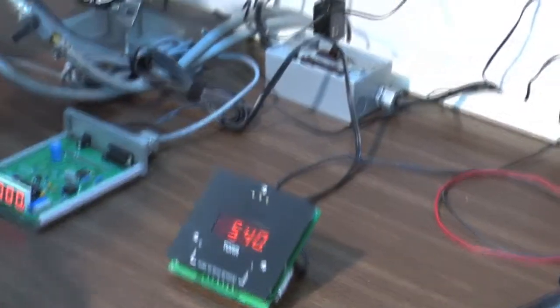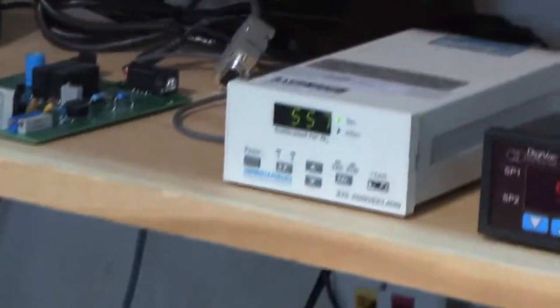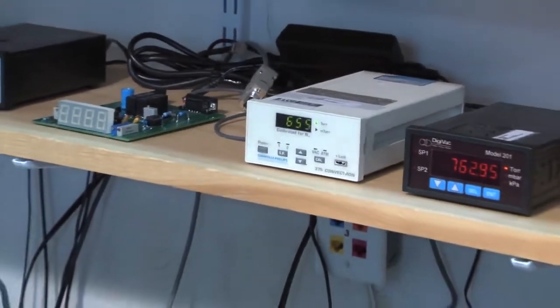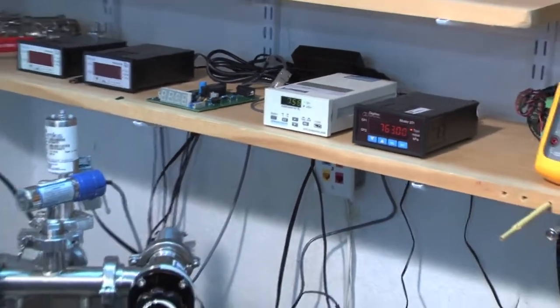560 torr, 540 torr. My last check for calibration is to vent my system all the way to atmospheric pressure and make sure we're reading approximately 740 to 760 torr, and we are. This is our properly calibrated Digivac 801W vacuum gauge.